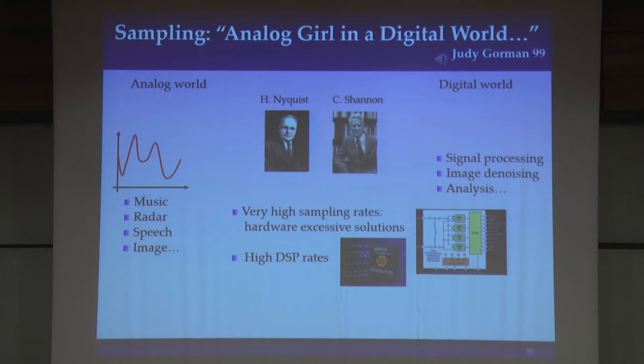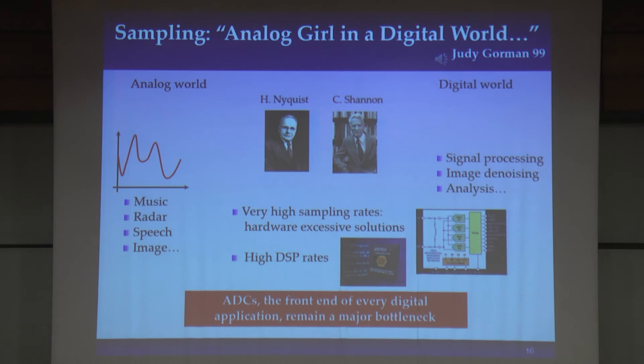The other limitation is that even if we somehow manage to sample at these very high rates, we end up with a massive amount of digital data that we have to store, process, and transmit — at least getting it off the machine over the first bus. This means that at the end of the day, the ADC — which is really the front end in any digital application — is becoming a major bottleneck.